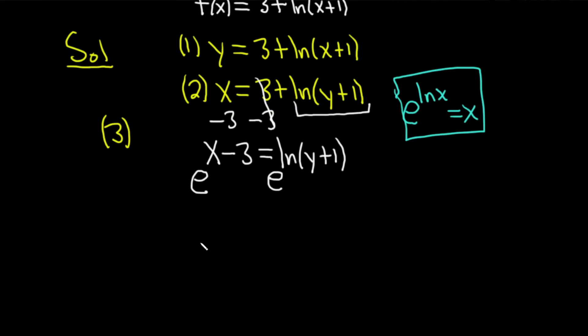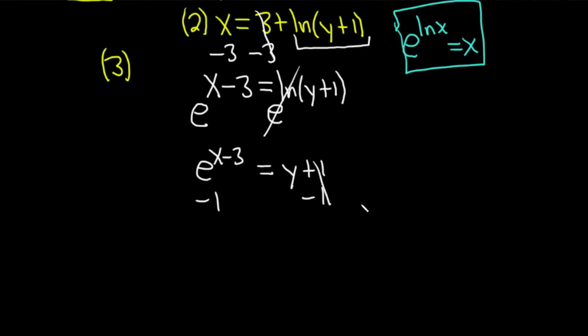So on the left-hand side, we just have e^(x-3). On the right-hand side, the e and the natural log, they pretty much cancel. So we're left with y+1. Now we just have to find y, so we'll subtract 1 from both sides. These cancel. We end up with e^(x-3) - 1 = y, which we can write as y = e^(x-3) - 1.